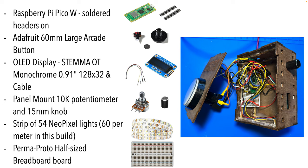Here's how I built this. The hardware used for the disco button includes a Raspberry Pi Pico W with headers soldered on, an Adafruit 60-millimeter large arcade button (I used the white one), an OLED StemmaQT monochrome display — the 0.91-inch 128 by 32 character model — you'll also want a StemmaQT cable for this, a panel-mount 10K potentiometer and knob, a strip of NeoPixel lights (I've got 54 lights in this project using a strip with 60 lights per meter). Make sure you've got your measurements right if you're laser cutting a housing, since sizes of different NeoPixel strips do vary. I soldered these components to a Perma-Proto half-size breadboard.